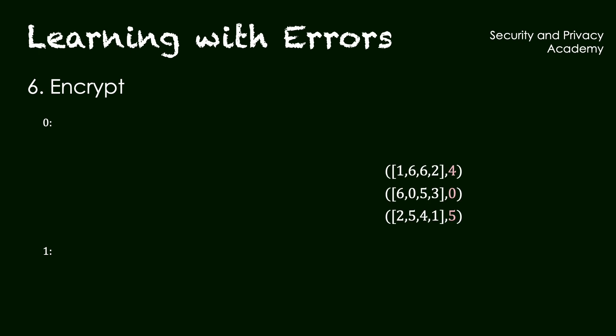First, we take a random number of these public key tuples from the three we have. So we take two at random, and let's say we take the first and the third tuple for the zero, and the first and the second one for the one bit value. These choices are random.